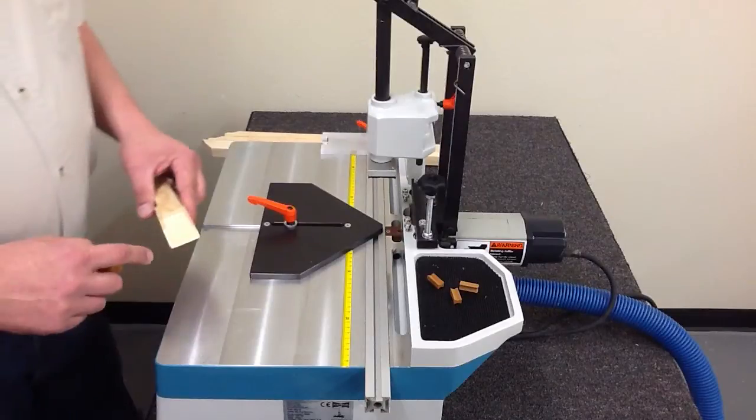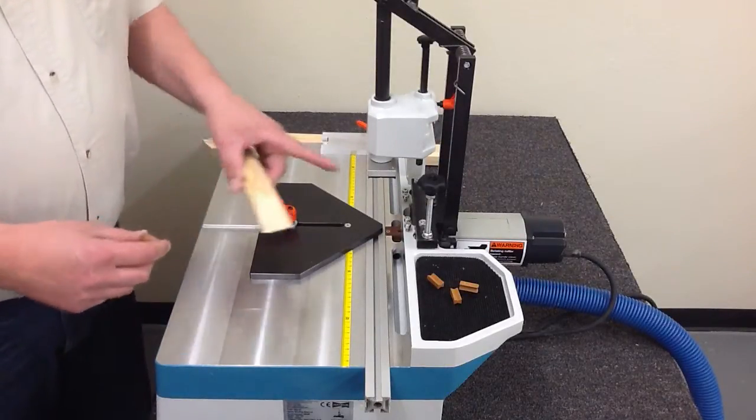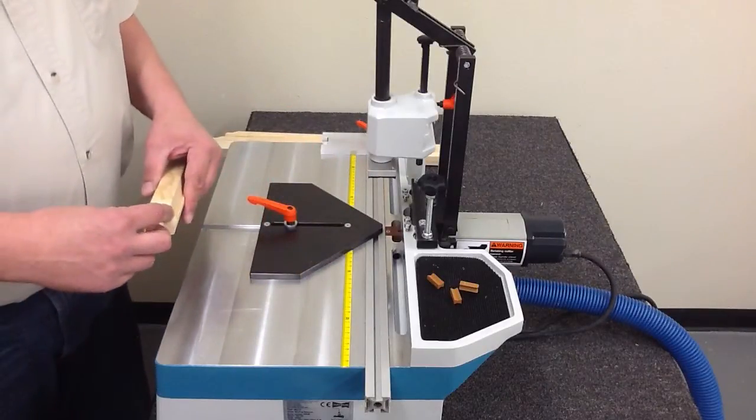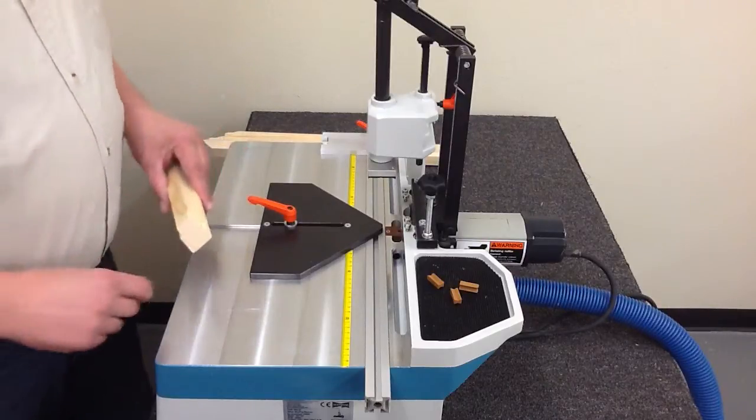So for inch and a quarter thick material we use a one inch dovetail key. Usually we would set the routing stroke on the machine to one inch. In this case we set it about inch and a half because we want to cut all the way through.